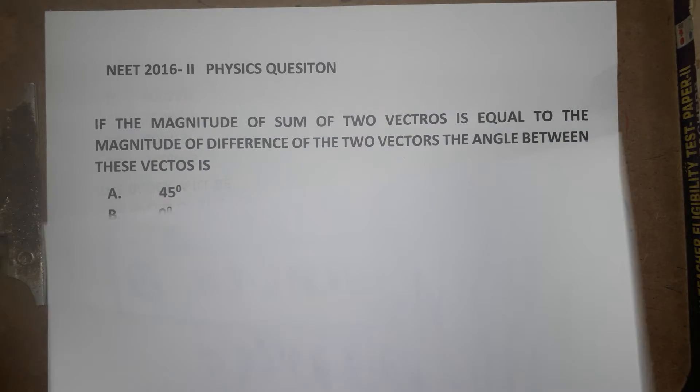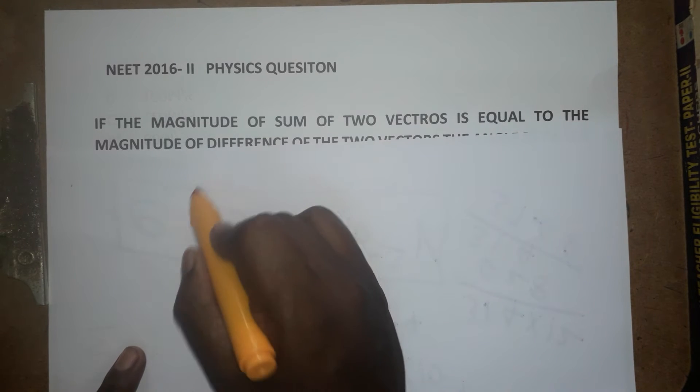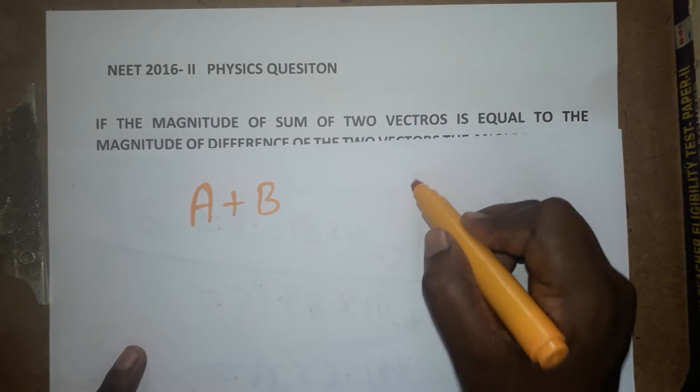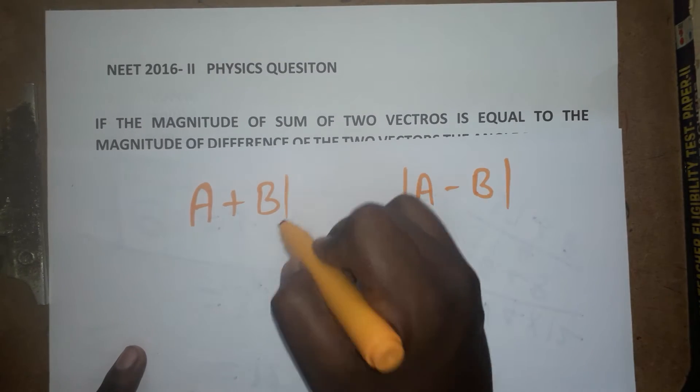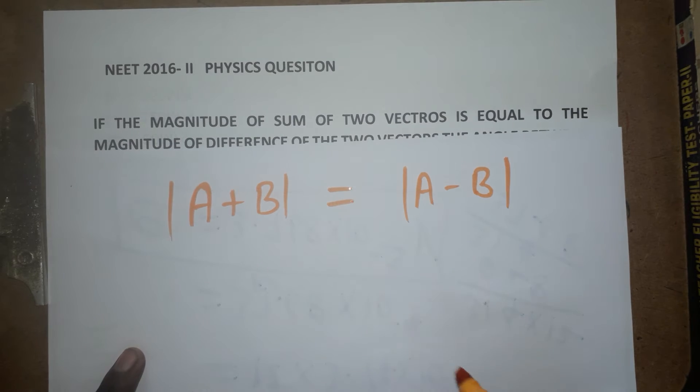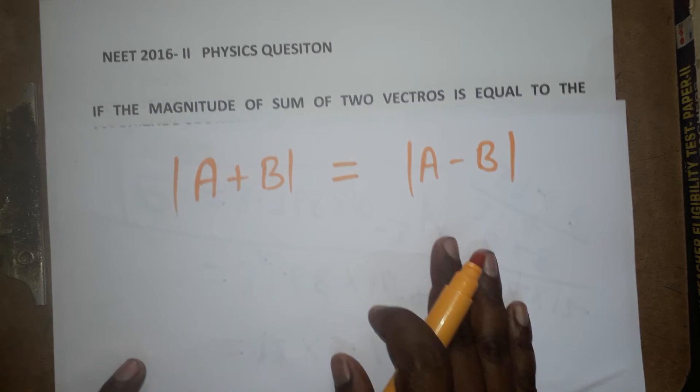It is one of the tricky questions. So how to solve this one? Sum of the two vectors, it is the difference of two vectors. I am taking it as modulus. It is not a resultant value. They are not mentioned resultant value. So these two, it is going to be equal.